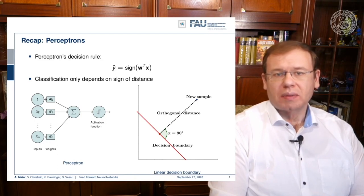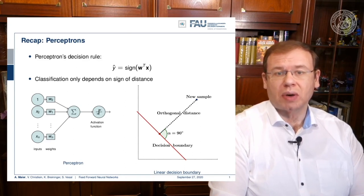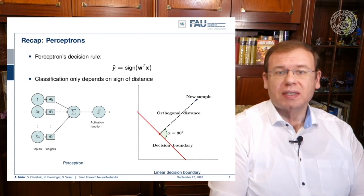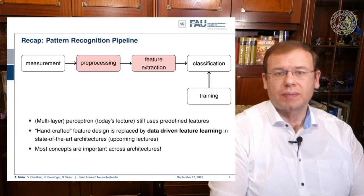You can interpret this essentially as you see on the right-hand side. The decision boundary is shown in red, and what you're computing with the inner product is essentially a signed distance of a new sample to this decision boundary. If we consider only the sign, we can decide whether we are on the one side or the other.